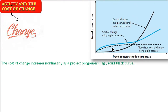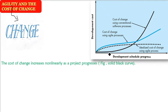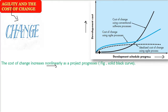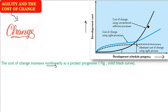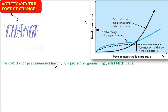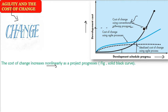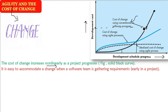There are three lines. You have to foresee the dark black curve. The x-axis is showing the development schedule progress and the y-axis is development cost. Here the cost of change increases non-linearly — it is not a straight line — as the project is progressing. The later the change, the higher the cost. In traditional waterfall models, spiral models, or prescriptive models, late-stage changes are very costly.